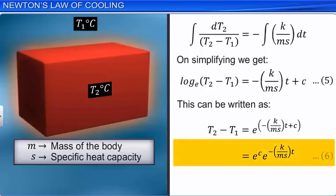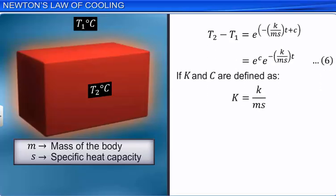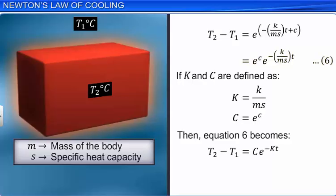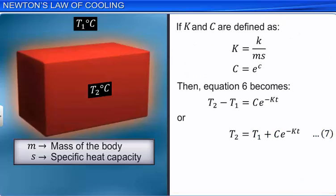In equation 6, if we define K' equal to K by M·S and C' equal to e raised to the power C, then equation 6 becomes: T2 minus T1 is equal to C'·e^(minus K'·T), or T2 is equal to T1 plus C'·e^(minus K'·T). Let this be equation 7. This equation can be used to calculate the time taken for a body to cool through a particular range of temperature. The law is applicable to small temperature differences, even when heat transfer is due to a combined effect of conduction, convection, and radiation, and the rate of cooling is proportional to the difference in temperature.